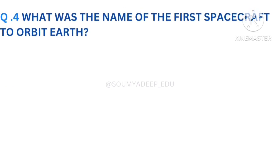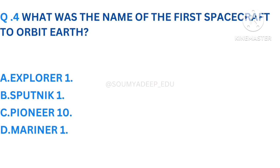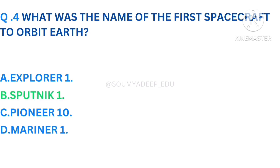What was the name of the first spacecraft to orbit? The options are Explorer 1, Sputnik 1, Peony 10, Mariner 1. The time starts now. The answer is Sputnik 1. Let's move to the next question.